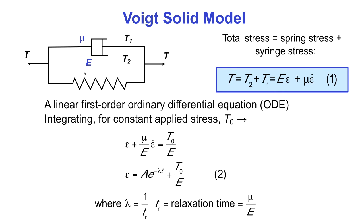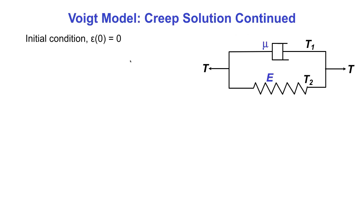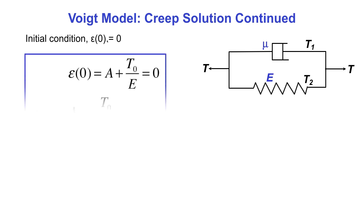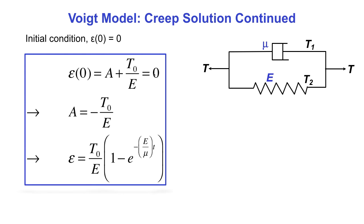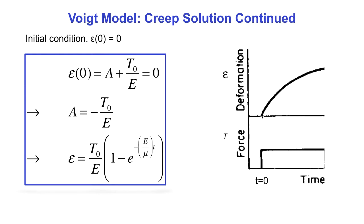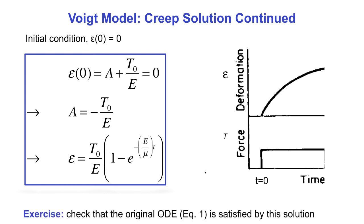Using initial conditions to find A: at time zero, the strain is zero because it takes finite time to displace the dashpot, unlike the spring. So A plus T0 over E equals zero, giving A equals minus T0 over E. The creep solution becomes epsilon equals T0 over E times one minus e to the minus E over mu times t. The strain starts at zero and increases under constant stress with a decreasing exponential rate. You can verify this satisfies the Voigt ODE.